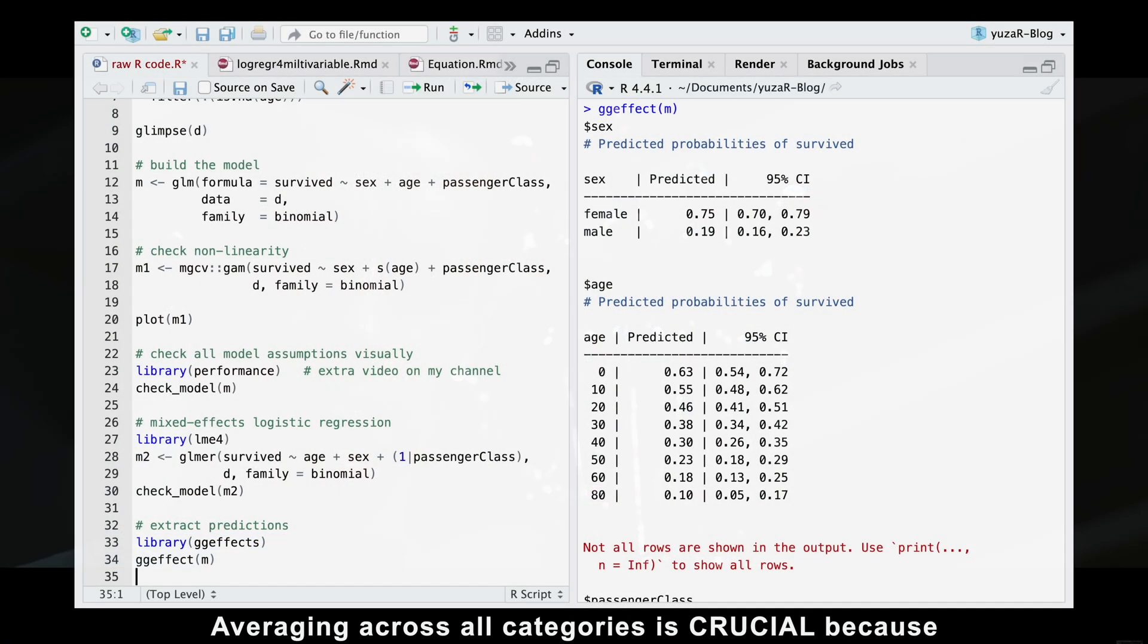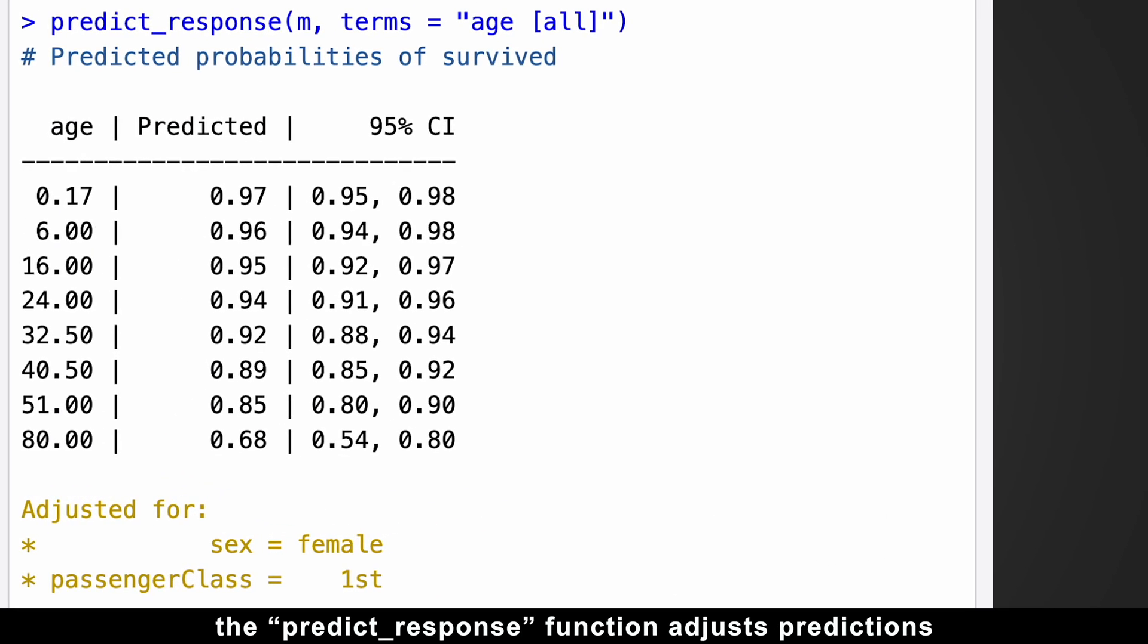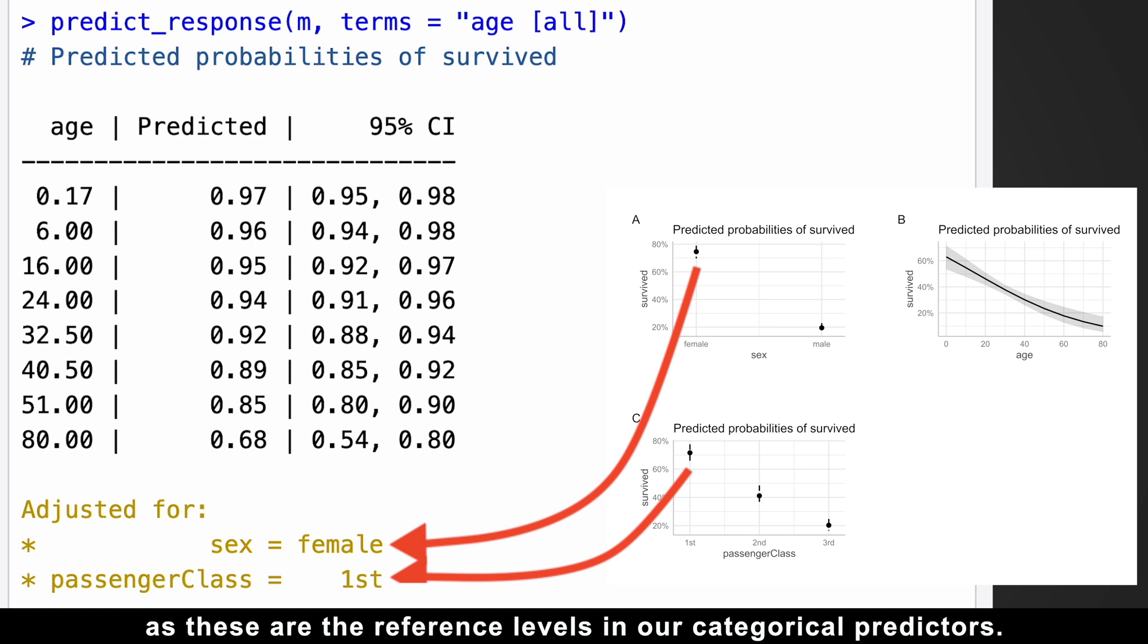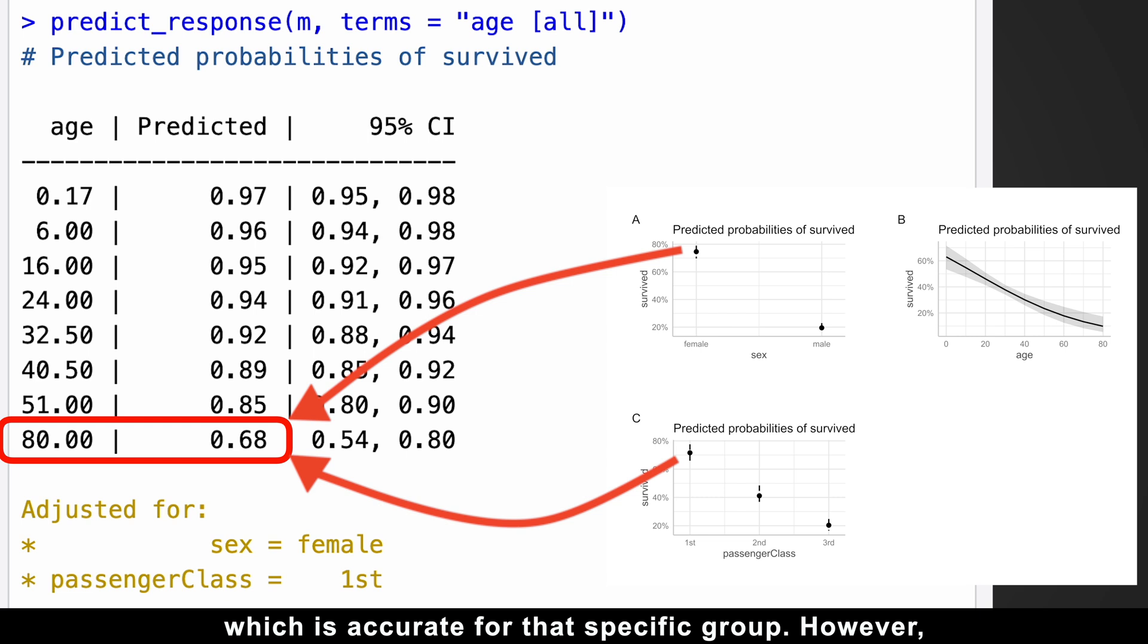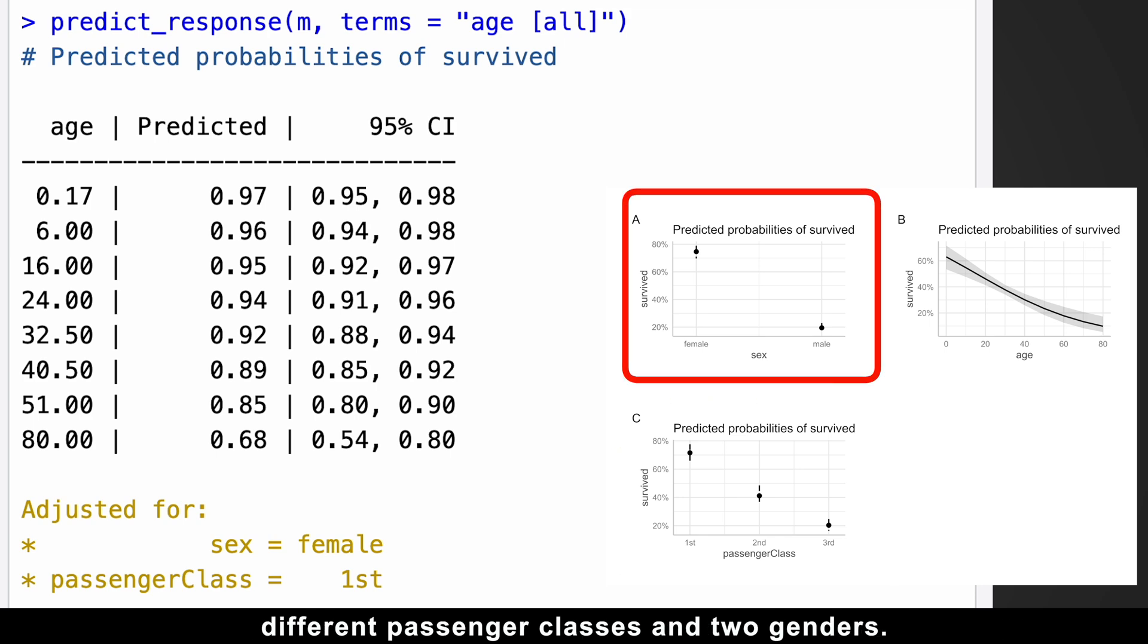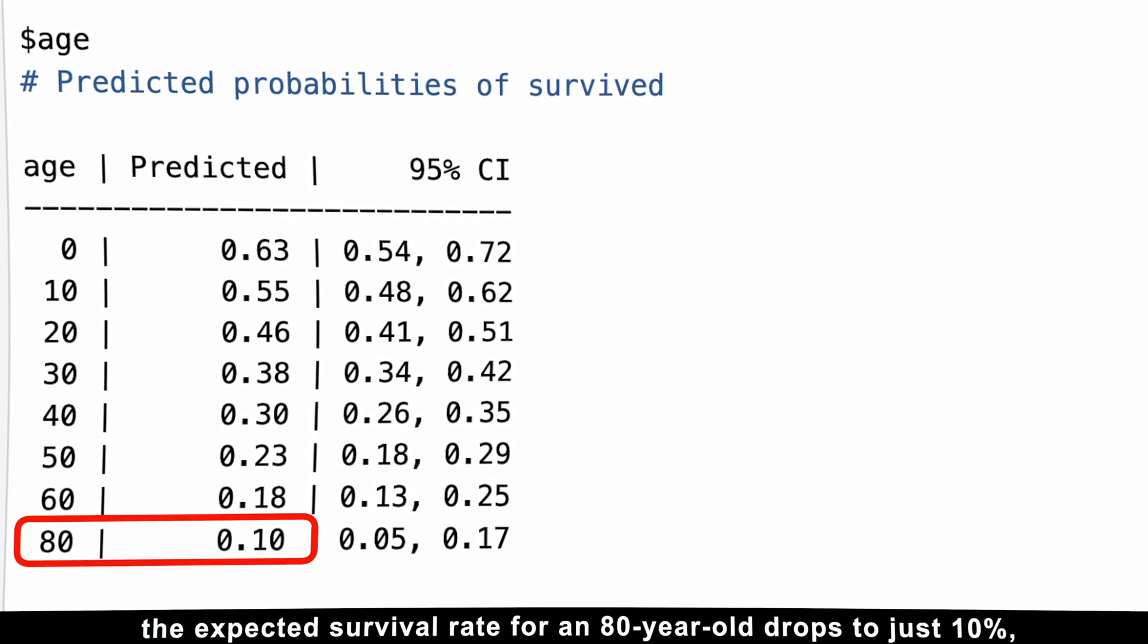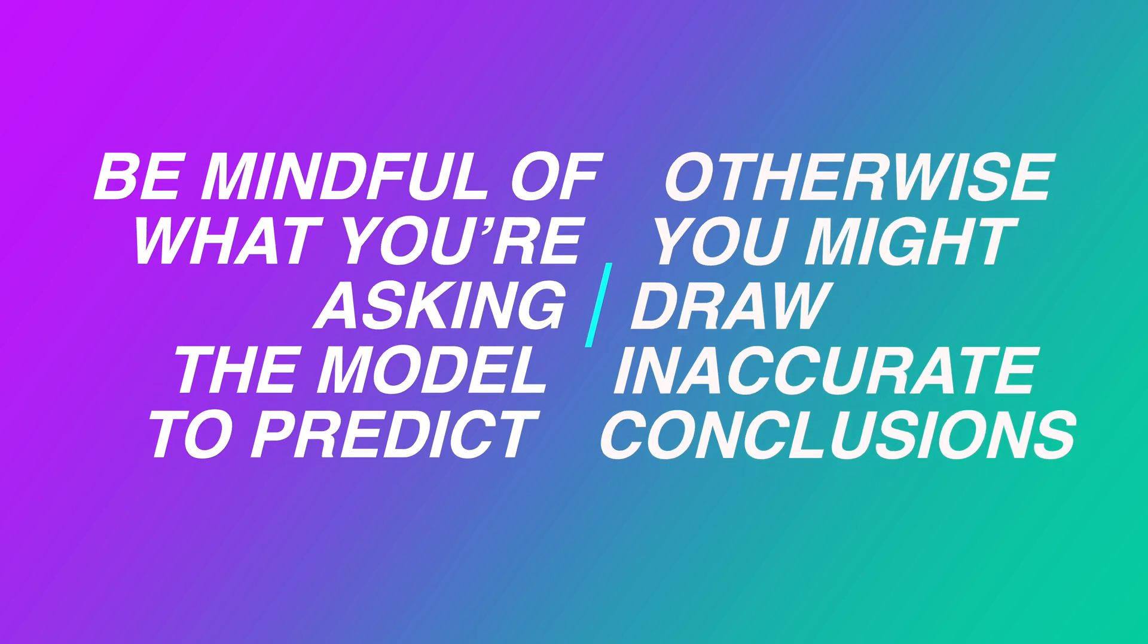Listen to me very carefully. Averaging across all categories is crucial because many predictive functions default to the first reference levels for categorical predictors. For example, the predict response function adjusts predictions based on females in the first passenger class, as these are the reference levels in our categorical predictors. This results in an estimated survival probability of 68% for an 80-year-old woman with a first-class ticket, which is accurate for that specific group. However, this can be misleading for our entire dataset, which includes three different passenger classes and two genders. When we average over all these categories, the expected survival rate for an 80-year-old drops to just 10%, much lower than 68%. So be mindful of what you're asking the model to predict. Otherwise, you might draw inaccurate conclusions.